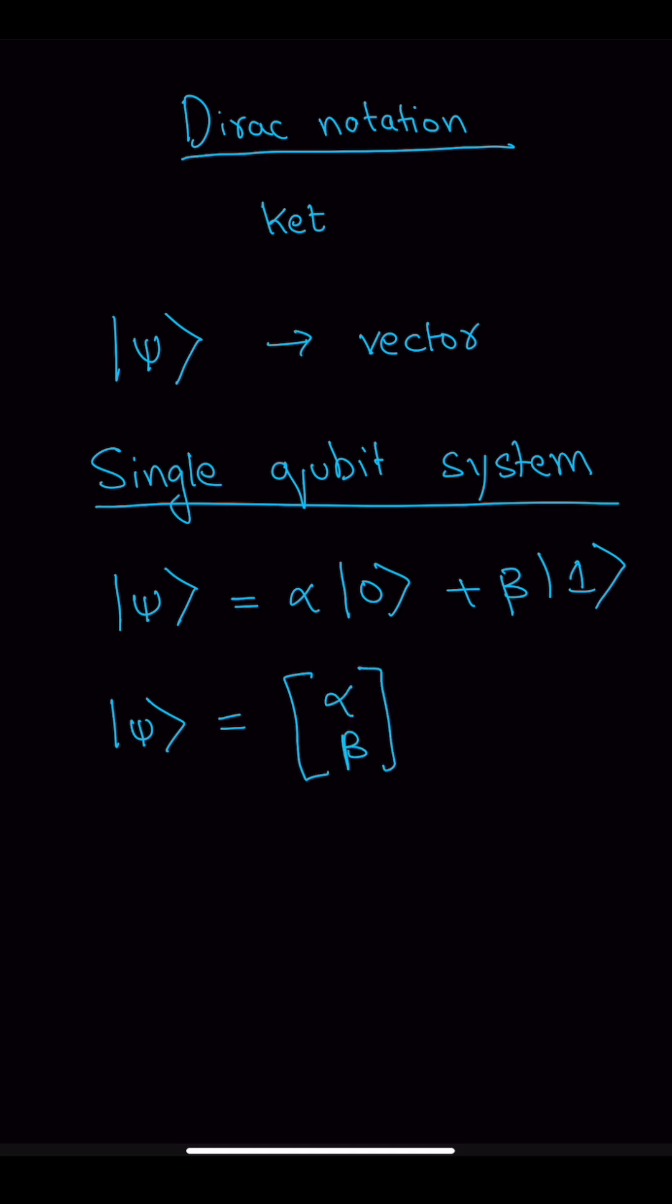Psi is a vector of the complex probabilities with which the qubit can be 0, 1, or a mix. Instead of writing the whole vector, we write it in ket notation, which represents the vector made of different probabilities. For a two qubit system,